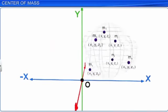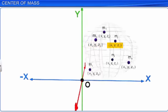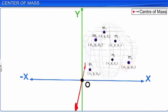Let us consider a system of N particles with masses M1, M2, Mi, ..., Mn, and the positions of these particles represented by (X1, Y1, Z1), (X2, Y2, Z2), ..., (Xi, Yi, Zi), ..., (XN, YN, ZN). The center of mass of a given system of N particles is a point in space.